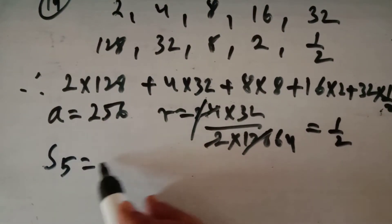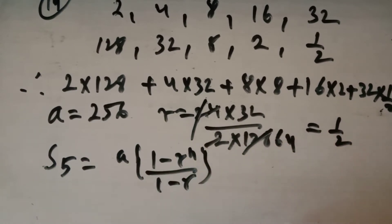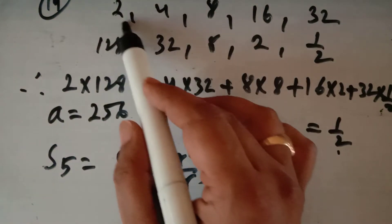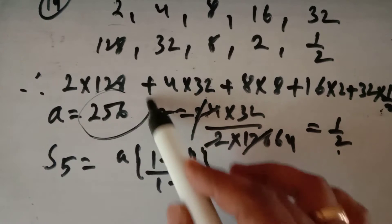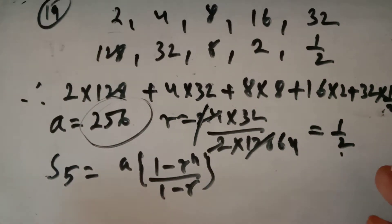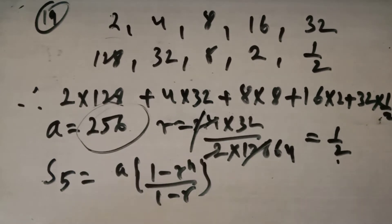Using the sum formula a(1 - rⁿ)/(1 - r) with n = 5, r = 1/2, and a = 256, we can find the sum. This shows that when two series are in geometric progression, the product of their corresponding terms also forms a geometric progression, which we prove generally in question number 20.